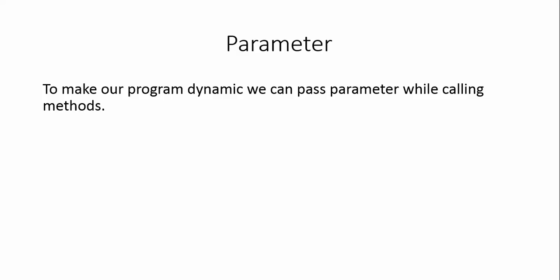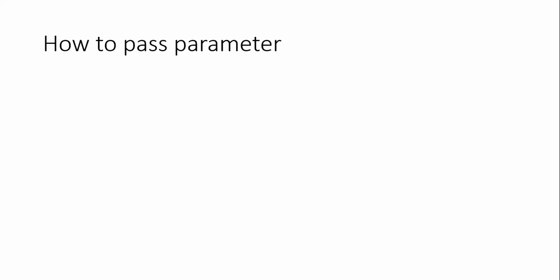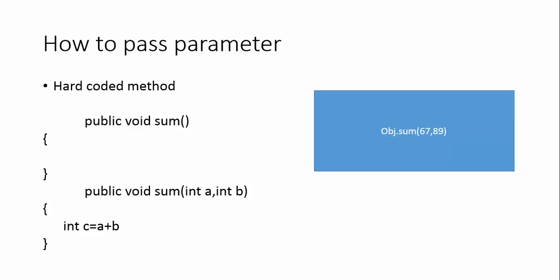To make our program dynamic, we can pass parameters while calling methods. Parameters can be compile time and runtime - if you need parameters at runtime from the user, that's possible, and passing parameters at compile time is also possible. The previous method we created was hardcoded - you needed to pass the data inside. Now let's take another method where we want to accept 'a' and 'b' from the user, perform an addition operation. When you call this method using an object - for example obj.sum(67, 89) - 67 will be stored in 'a' and 89 will be stored in 'b'.